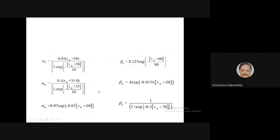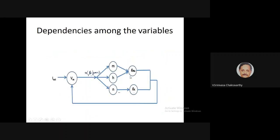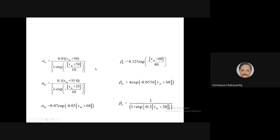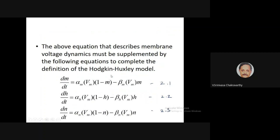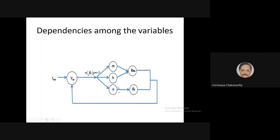The loop closes as follows: external current controls the voltage, the voltage in turn controls the alpha-beta functions, those functions govern the m, h, and n gating variables, and then m, h, and n determine the two conductances GNa and GK, which again govern the voltage through the voltage equation.